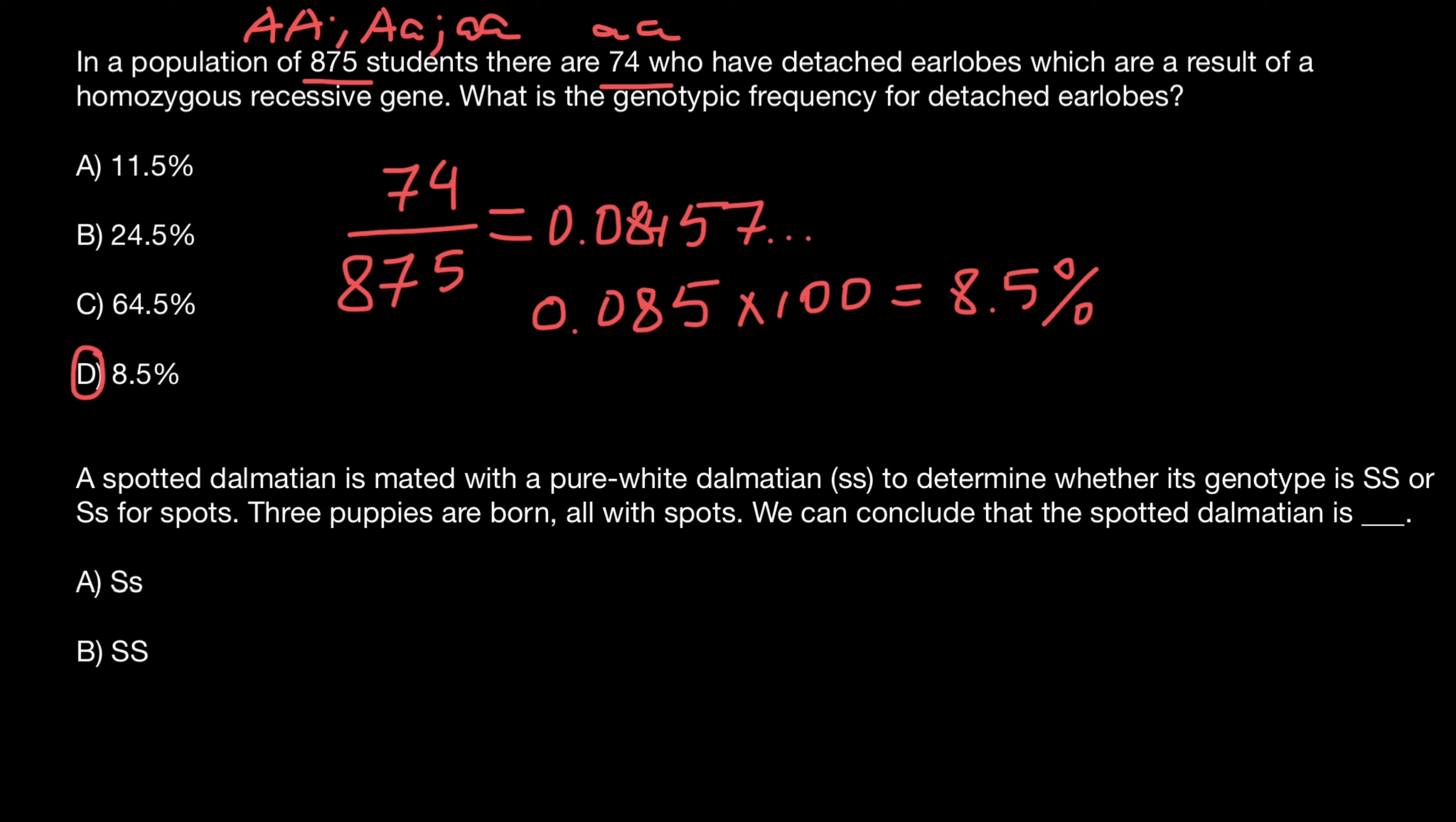Next question. A spotted dalmatian is mated with a pure white dalmatian, which is homozygous recessive, to determine whether its genotype is dominant or heterozygous for spots. Three puppies are born, all with spots. We can conclude that the spotted dalmatian is... This type of cross we call a test cross, when we take one parent of known homozygous recessive genotype in order to determine whether another parent is homozygous dominant or heterozygous for this trait.